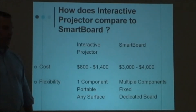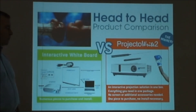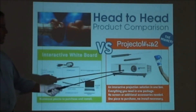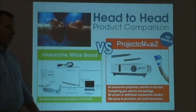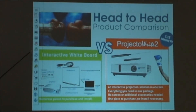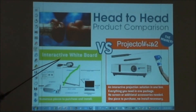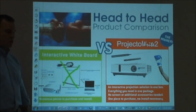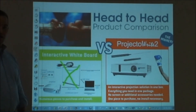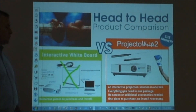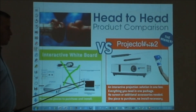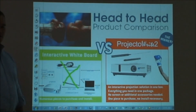Secondly, from a flexibility standpoint, interactive projector is much more flexible than smart board. To show you visually: the interactive projector uses the projector, the wand, and the writing utensil. The interactive whiteboard, by contrast, has a fixed whiteboard that requires the projector and whiteboard to be purchased, installed, and utilized together — whereas the interactive projector is much more flexible and portable. Very similar functional use, but the interactive projector has a significantly lower cost and a significant advantage in terms of flexibility.